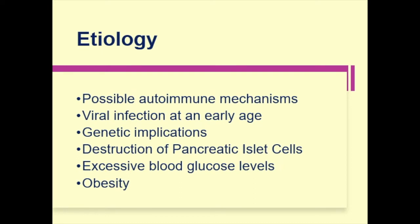For the causes or possible causes of your diabetes: one is a possible autoimmune mechanism, specifically if we're talking about your juvenile diabetes or Type 1 diabetes mellitus. Second, viral infection at an early age — the presence of viral infection may possibly cause autoimmune responses. Then, genetic implications. As previously mentioned, there is a strong hereditary component, especially for your Type 1 diabetes.